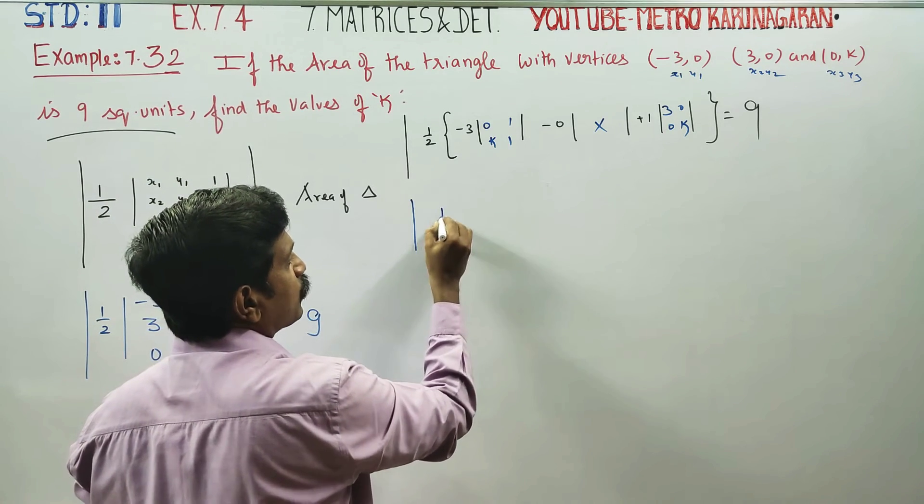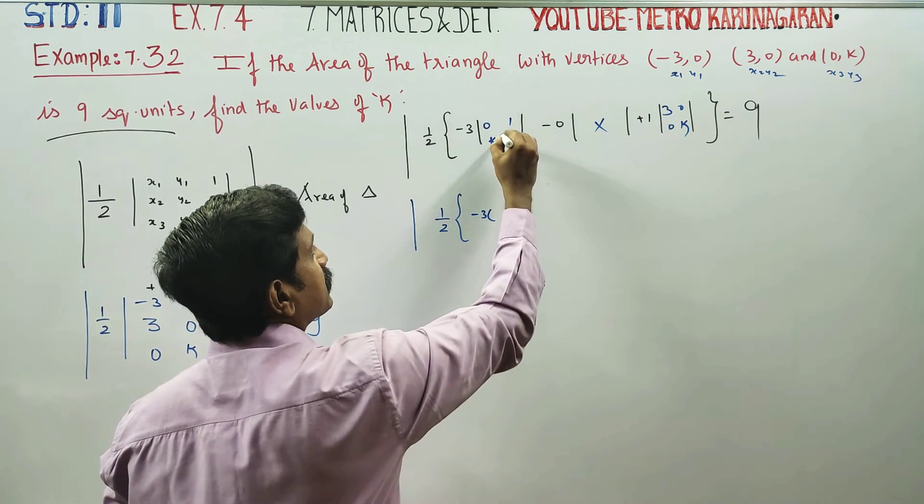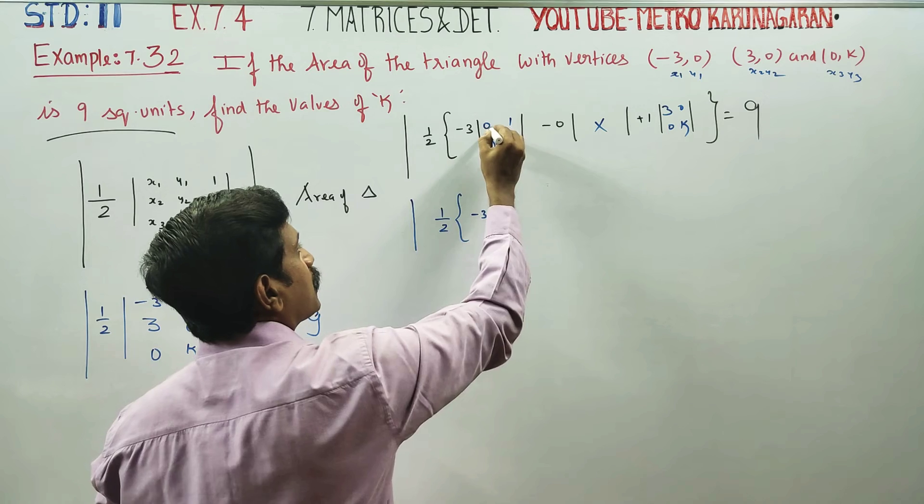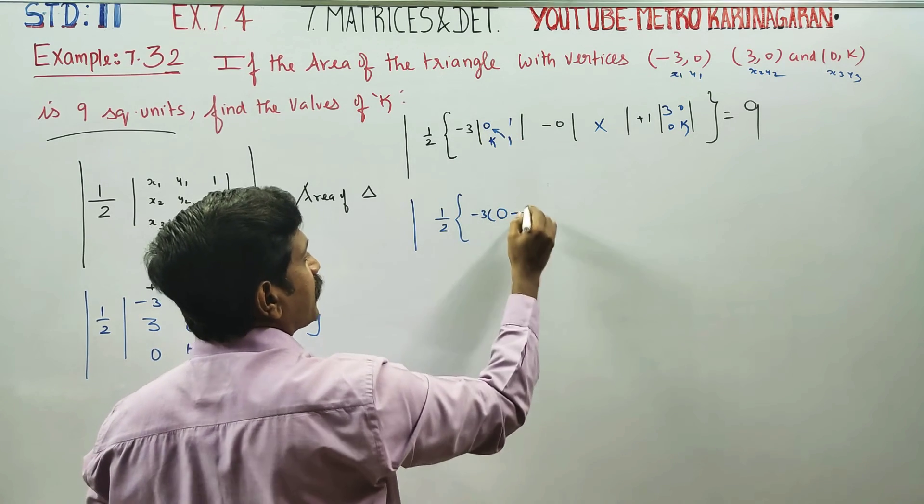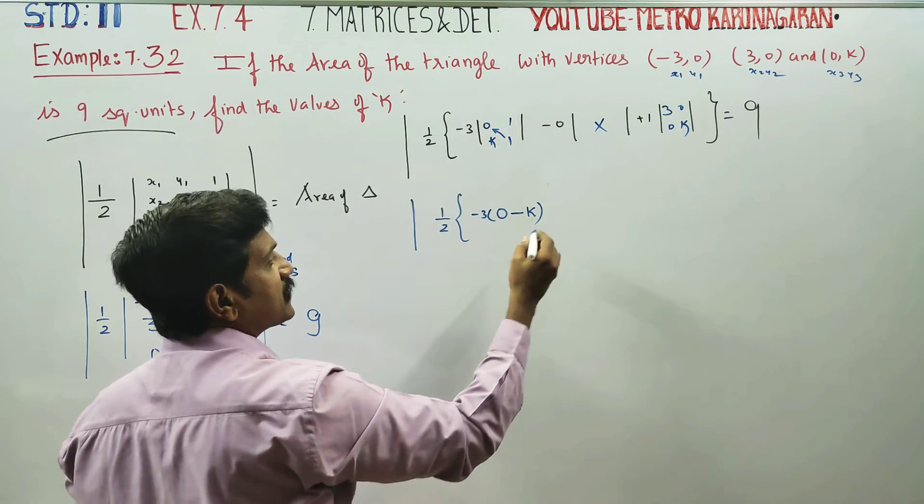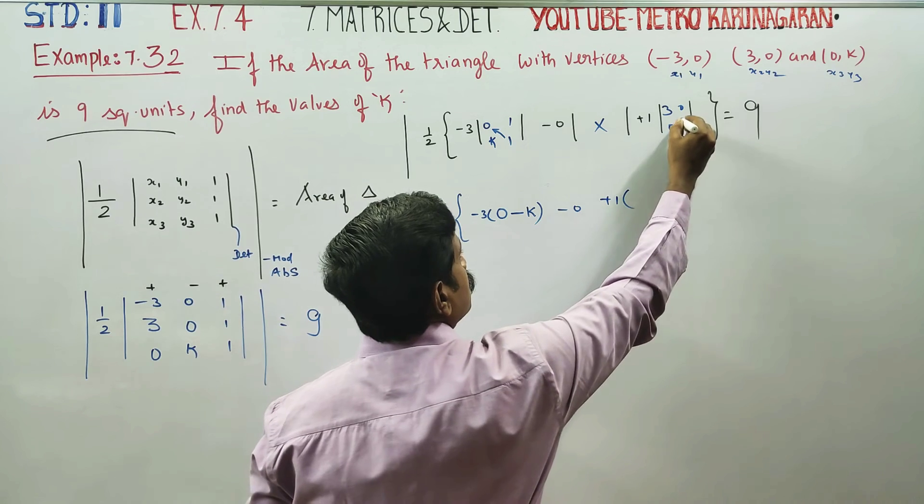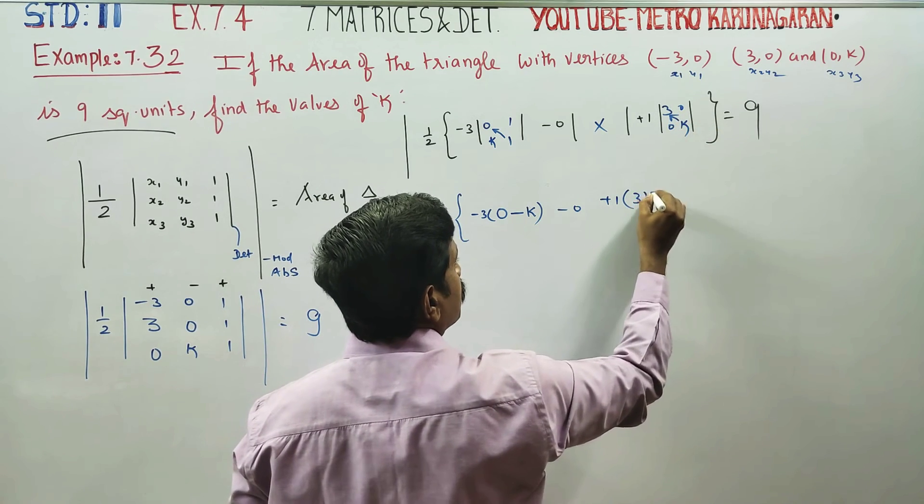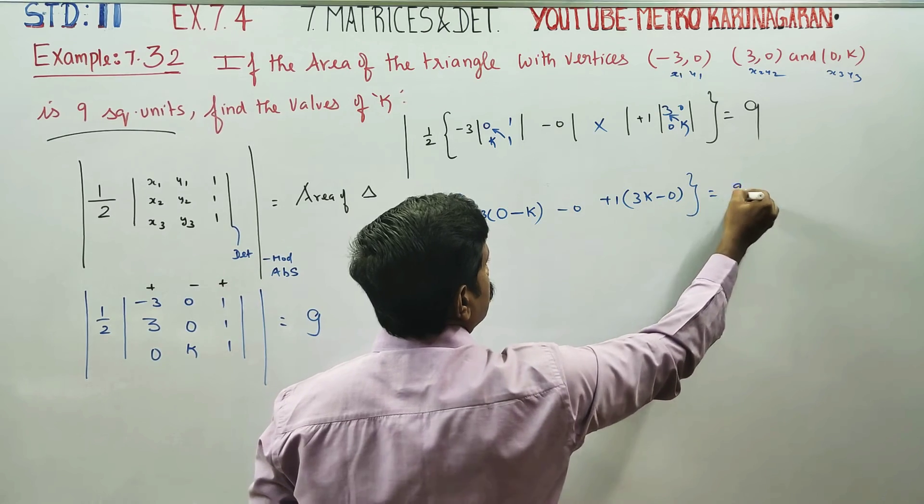Modulus or absolute value, 1 by 2 minus 3. Right hand side minus left hand side. 1 into 0 is 0 minus left hand side 1 into k is k. 0 into anything is 0. Plus 1 into right hand side 3K minus 0. Is equal to 9.